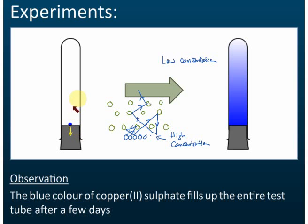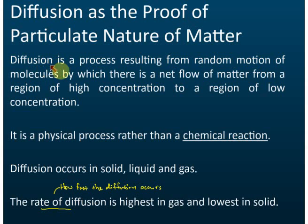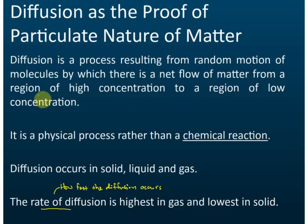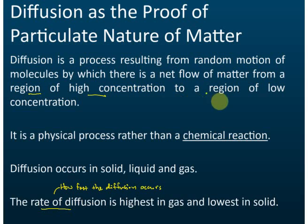This happens even against gravity — according to the pull of gravity it should go down, but it goes up because this part has high concentration and this part has low concentration. In your definition you must state: diffusion is a process resulting from random motions of molecules by which there is a net flow of matter from regions of high concentration to regions of low concentration.